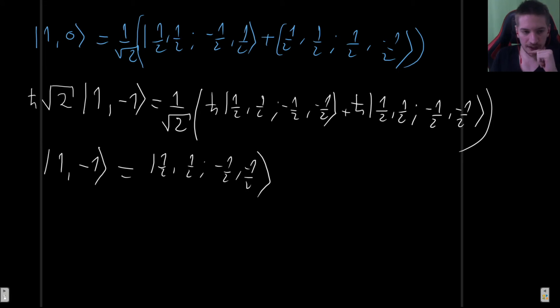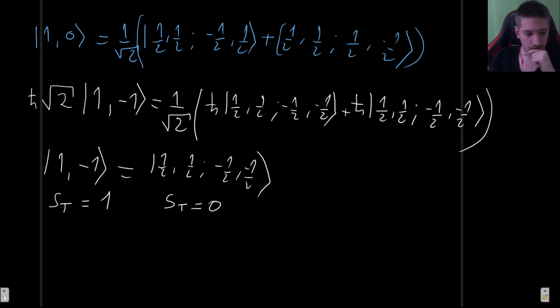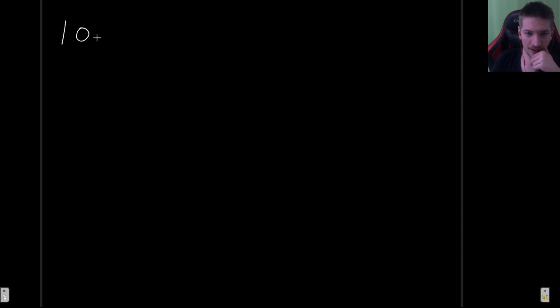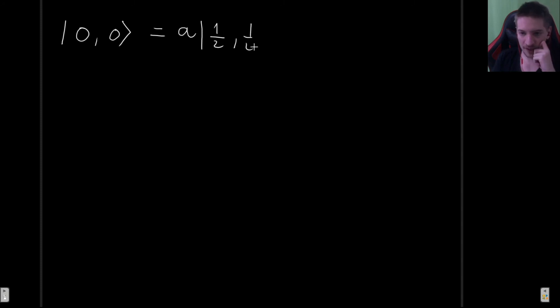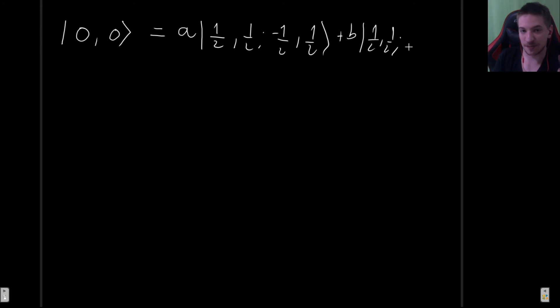That was the procedure for when s_total equals one. Now let's see what happens when s_total equals zero. We want to find the ket |0, 0⟩. There are going to be two possibilities: |0, 0⟩ = a times |1/2, 1/2; -1/2, 1/2⟩ plus b times |1/2, 1/2; 1/2, -1/2⟩, where the s values of each particle remain one-half and the m values must add to zero. We have coefficients a and b to determine, requiring two conditions — the states must be orthonormal.